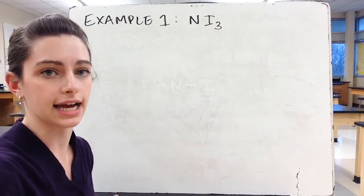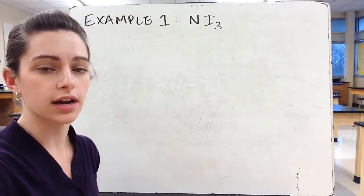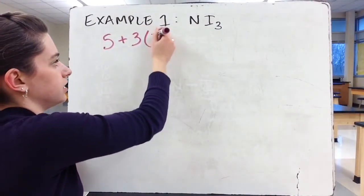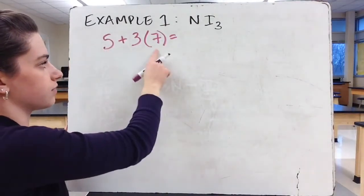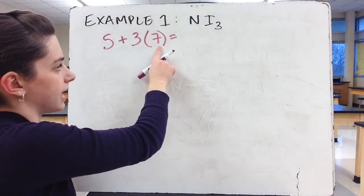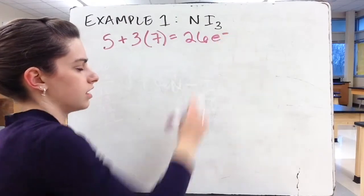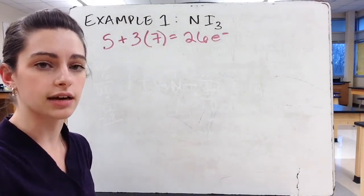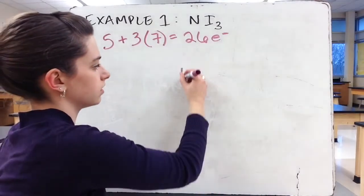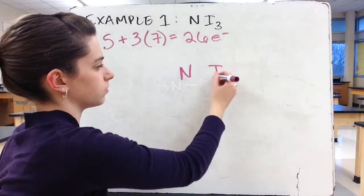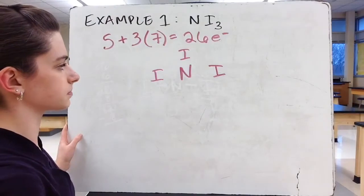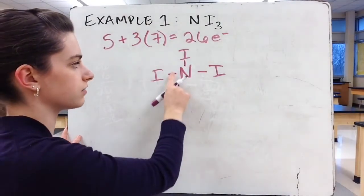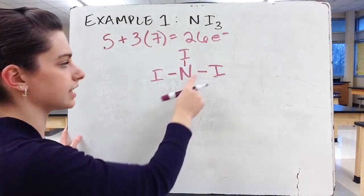Our first example is nitrogen triiodide, NI₃. Step one: count total valence electrons. Nitrogen has five, and we have three iodines each with seven, so 3×7=21 plus 5 gives us 26 total electrons to place. Step two: the central atom is nitrogen — it's the single atom — and the three iodines are arranged as terminal atoms around it. Step three: connect each iodine to nitrogen with a single bond. Each bond represents two electrons, so three bonds use six electrons, leaving 20.